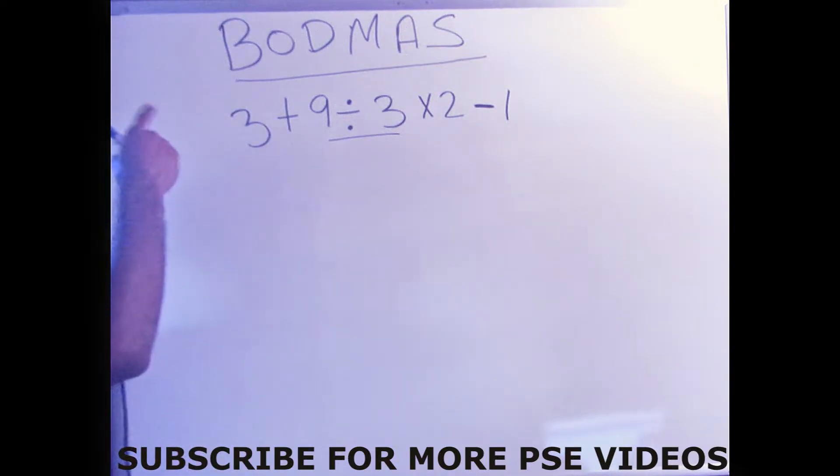So the rule is you're going to solve whatever is in brackets first. Then operations such as exponents, which is 2 to the second power, which is 2 times 2. Then you go to division, then multiplication, then addition, and then subtraction.